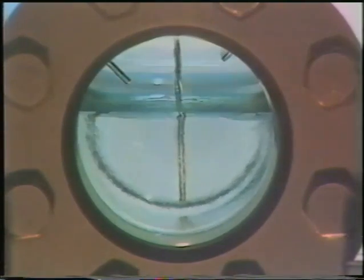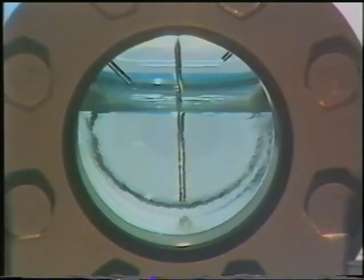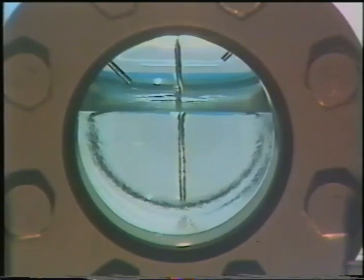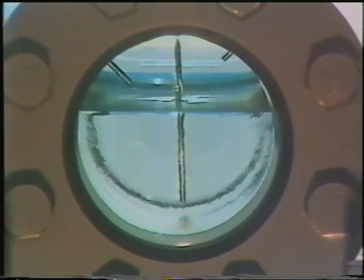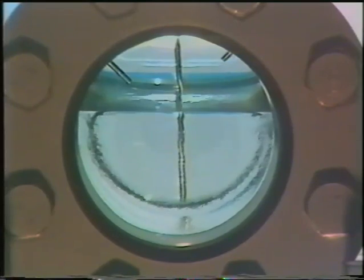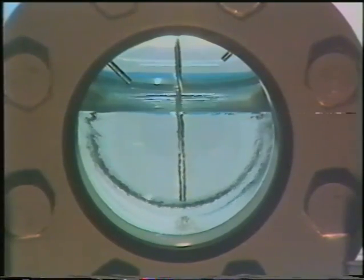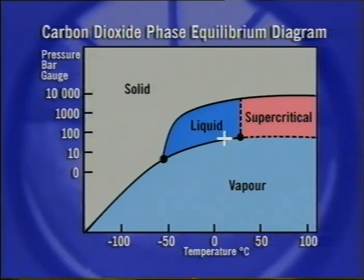Now hot water is allowed to flow through the heating pipes installed around the exterior of the cell. The temperature of the liquid CO2 increases with a consequent increase in pressure as the liquid boils. The present conditions are represented by a point slightly higher up the equilibrium line.